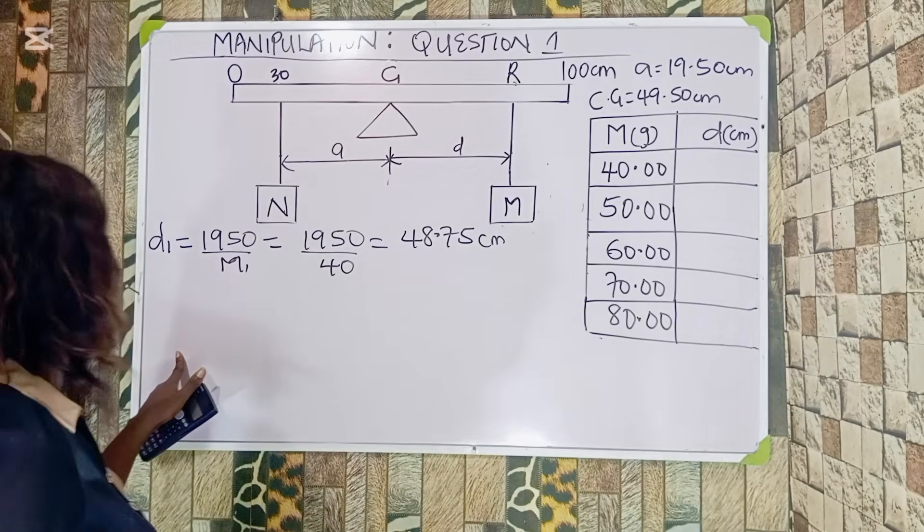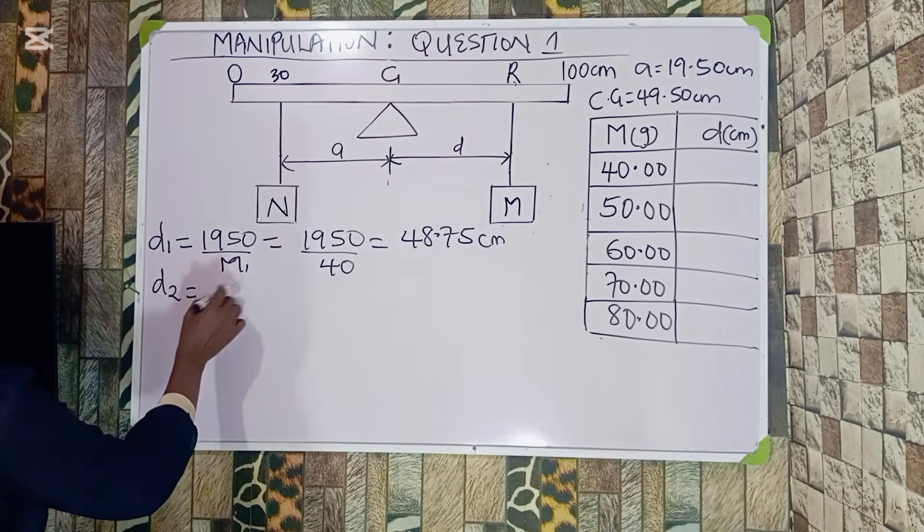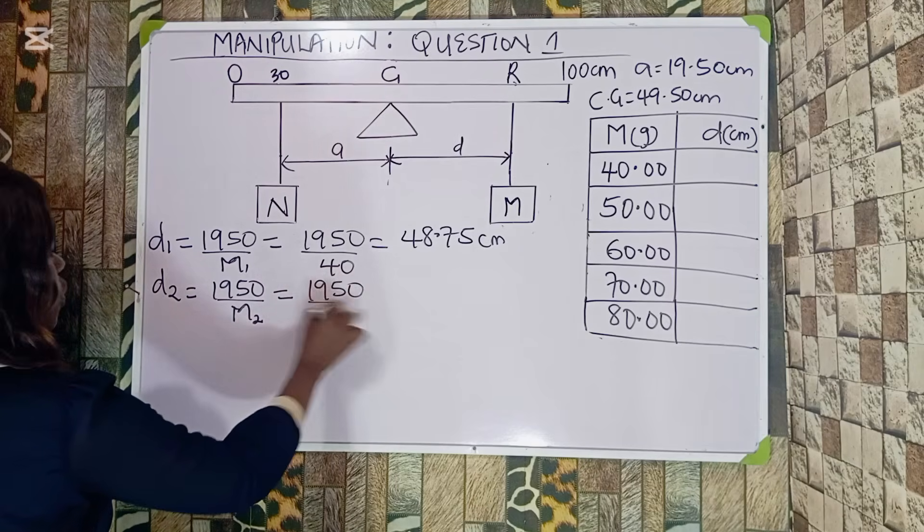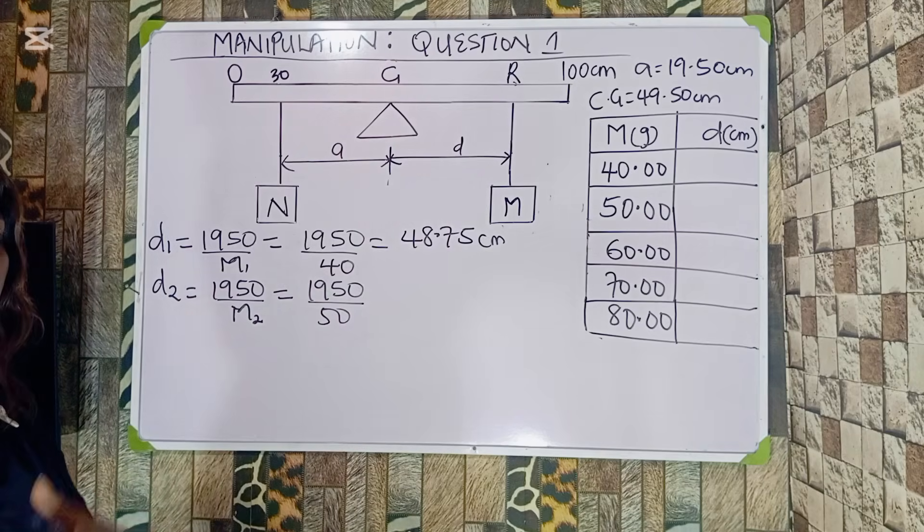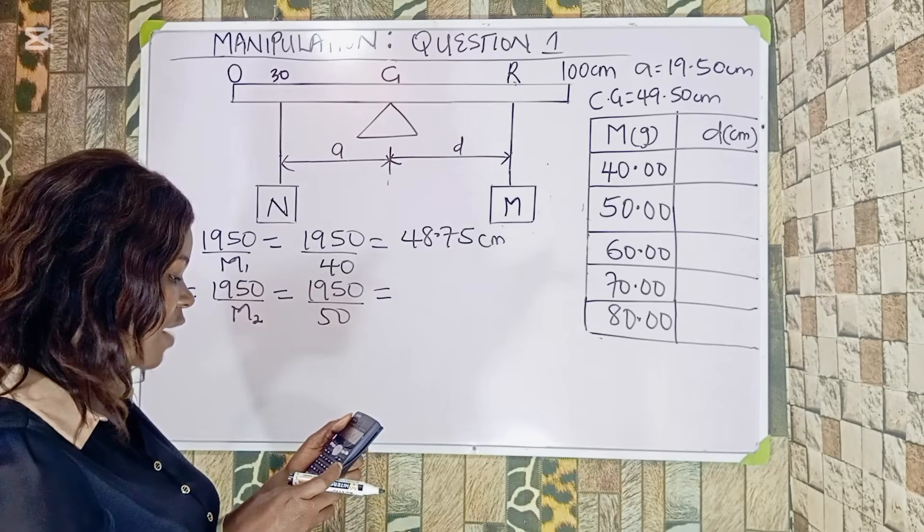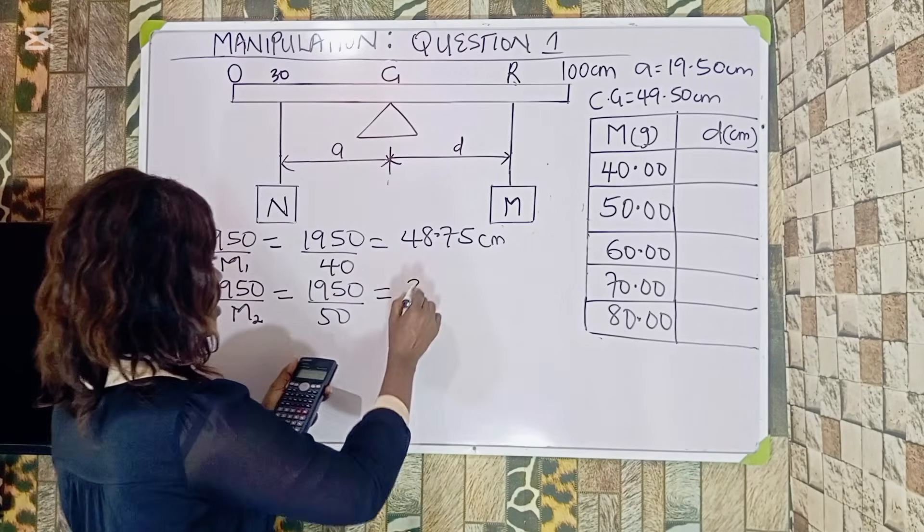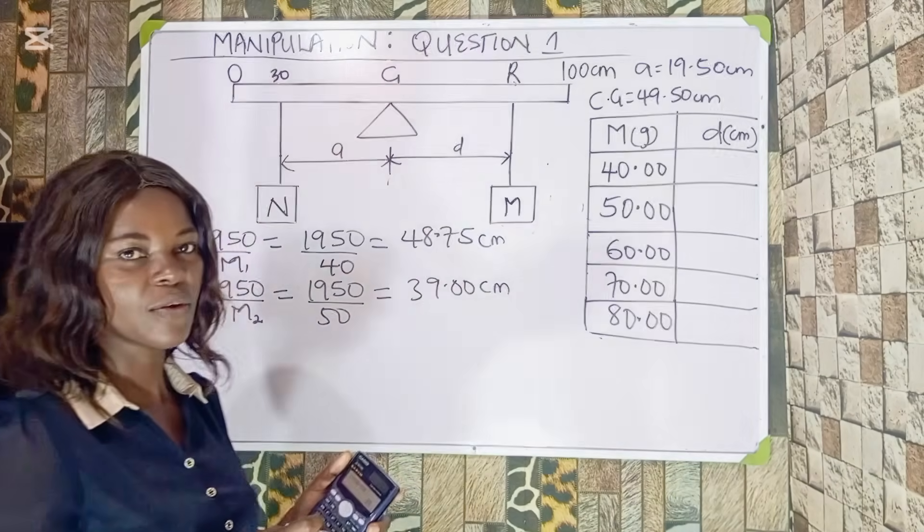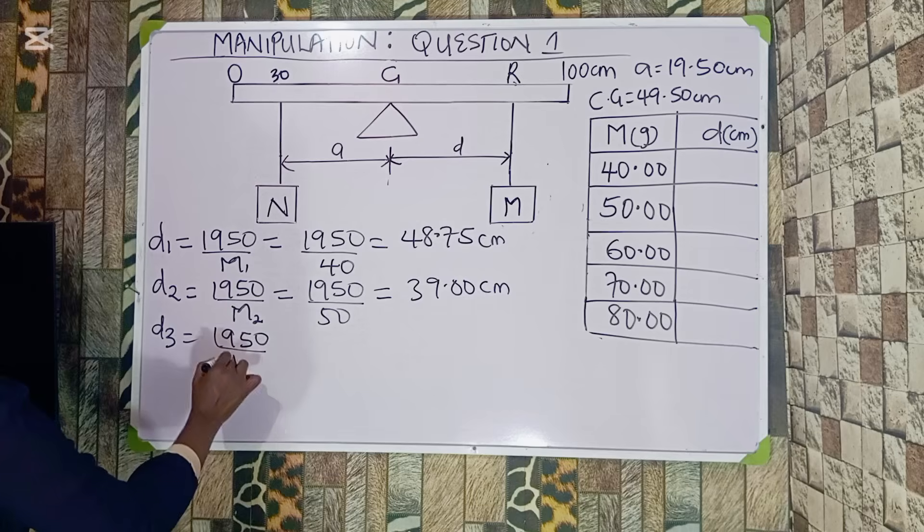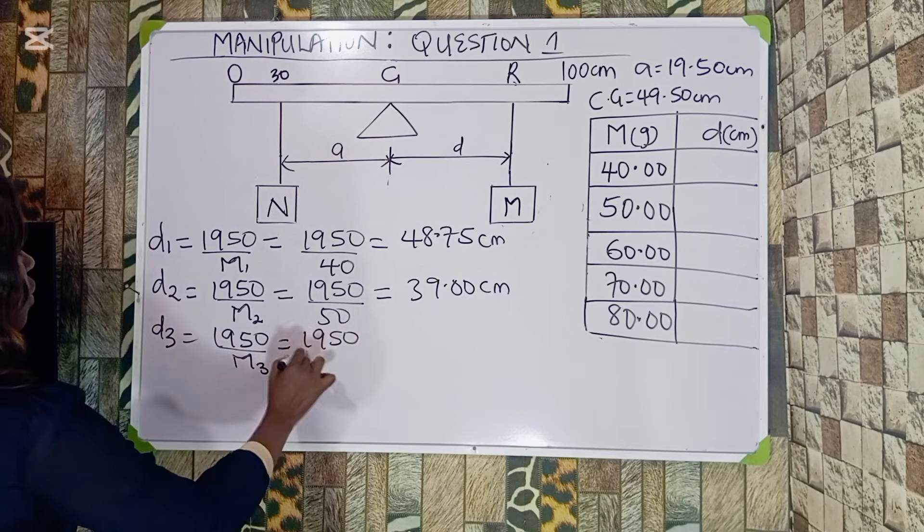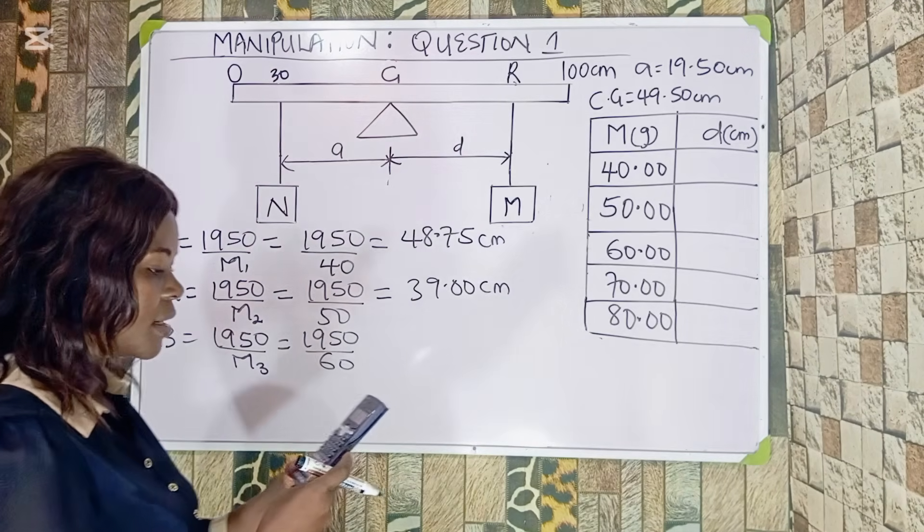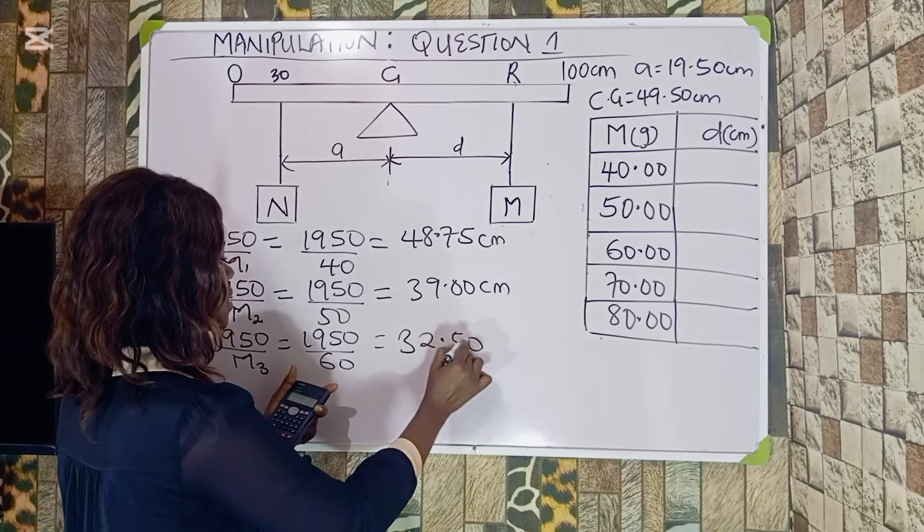Let's proceed again by saying D2 equals 1950 over M2, which is 1950 over 50. Depending on the masses you are given to vary in your question, just follow this method and you are going to get this correct. I am going to divide by saying 1950 divided by 50, which gives me 39.00 centimeters.